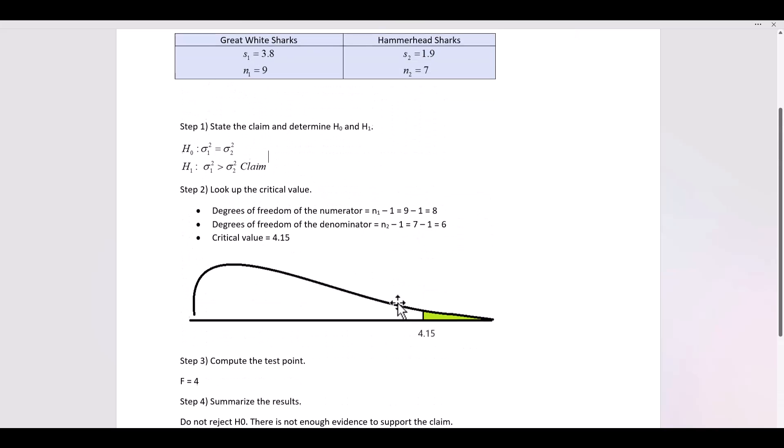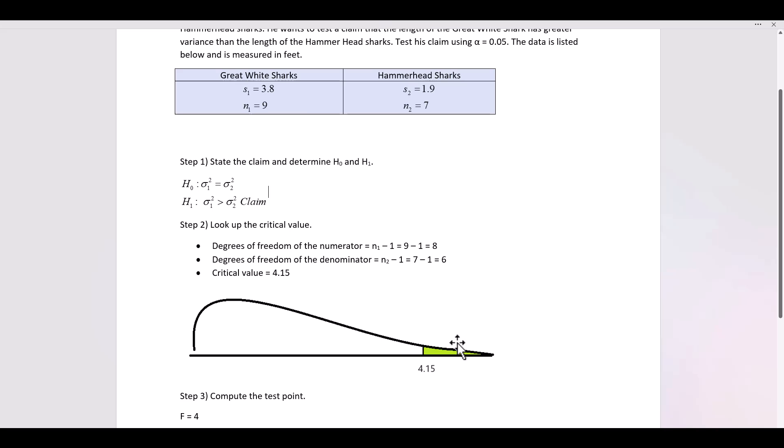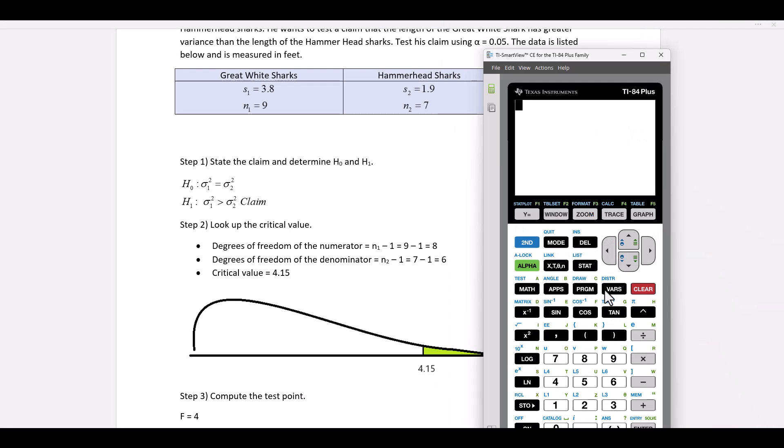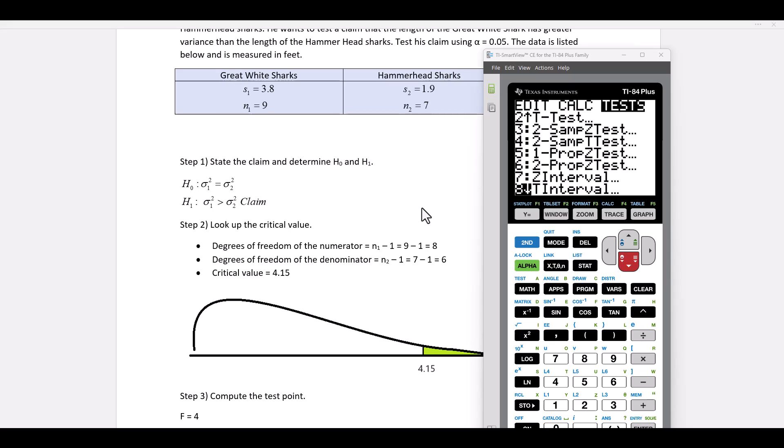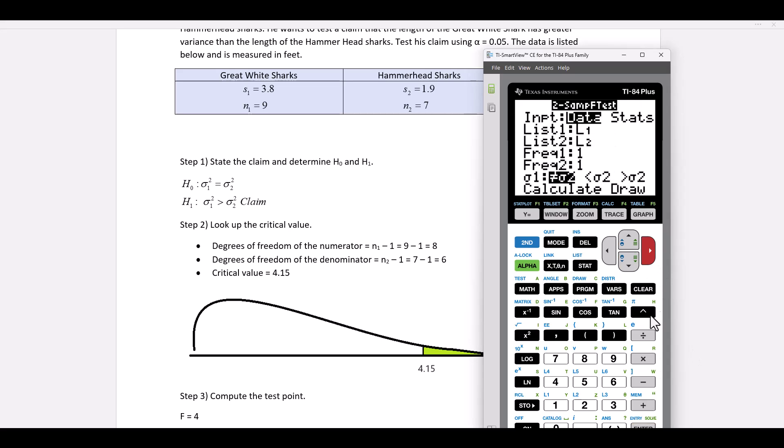Now we want to compute the test point. We will use the TI calculator to do this. We click on stat, test, and we have to go down to where it says two sample F-test. Select enter. Click on stats.